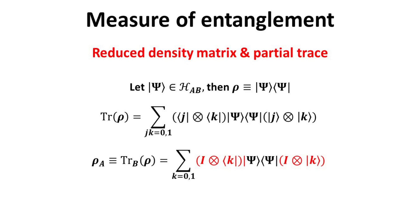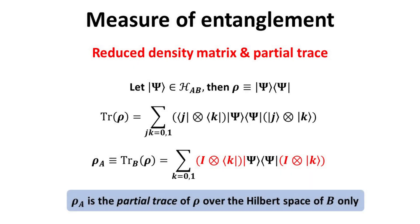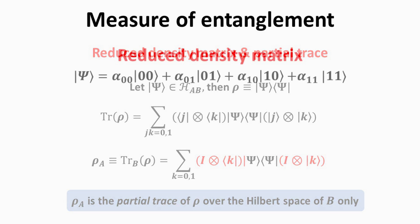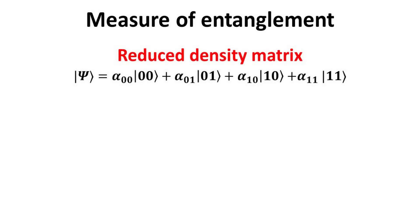The partial trace, on the other hand, performs the trace only over part of the Hilbert space and returns a matrix called the reduced density matrix. For example, the reduced density matrix rho_A is obtained by taking the partial trace over the Hilbert space B. Compared to the definition of the full trace of rho, we replace the basis ket j by the identity matrix instead. Again, rho_A is the partial trace of rho over the Hilbert space of B only. Let's consider the general composite two-qubit state given by the big psi ket. The composite density matrix can be constructed from the outer product of big psi ket, written in terms of the alpha amplitudes as shown.